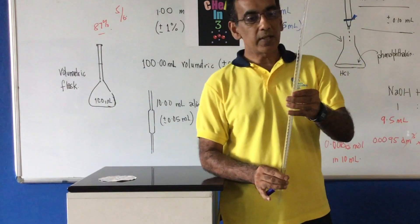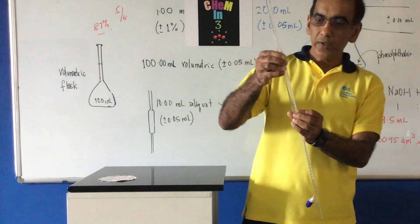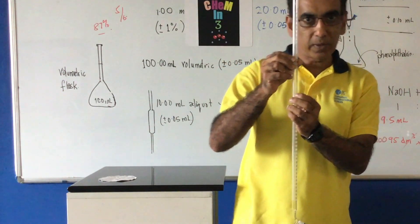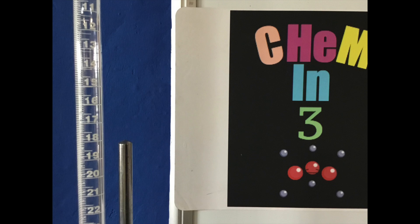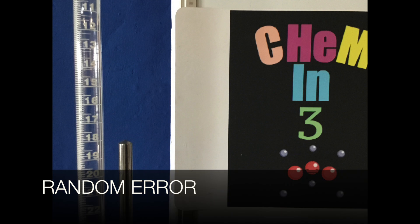Take this burette for instance. It measures the volume of a sample in here to an uncertainty of half of this smallest increment. The smallest increment on the burette is 0.1 of a milliliter, and half of that is 0.05 of a milliliter. Every time I measure a volume using the burette, the actual value could be off from the truly accurate value by plus or minus 0.05 of a milliliter. It could be above or below. That too is a random error.